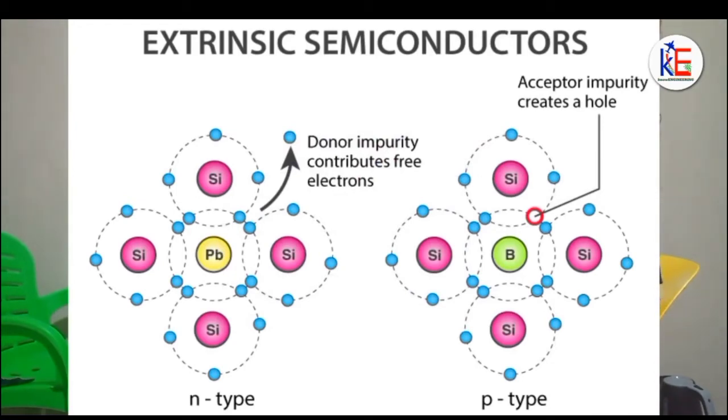When a trivalent element is used to dope an intrinsic semiconductor, the result is an extrinsic semiconductor that has more holes, and hence it's called the p-type semiconductor.